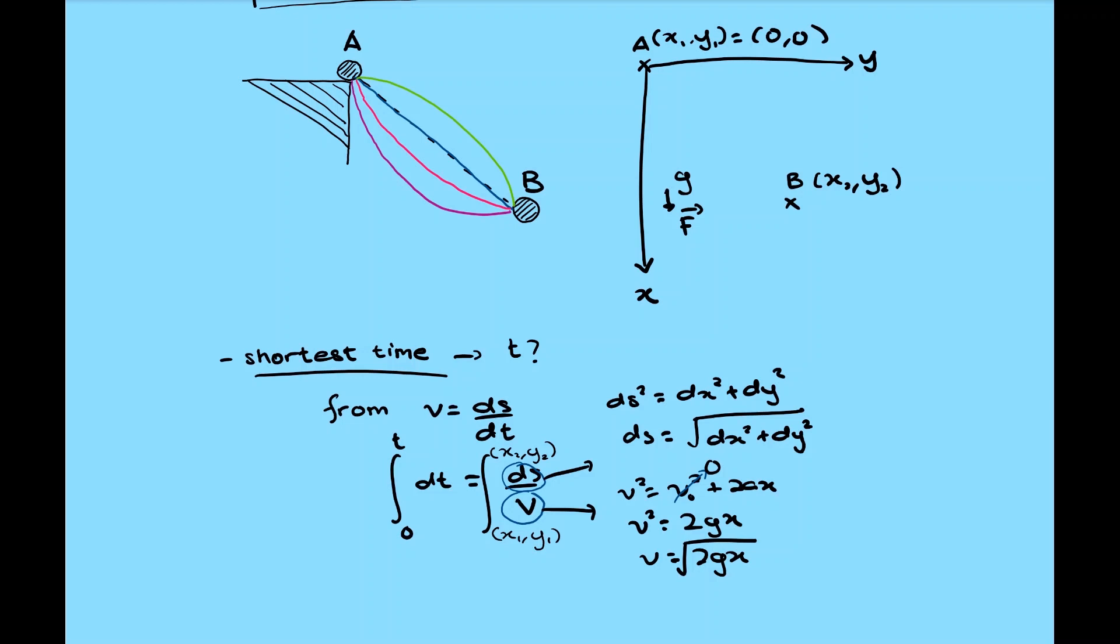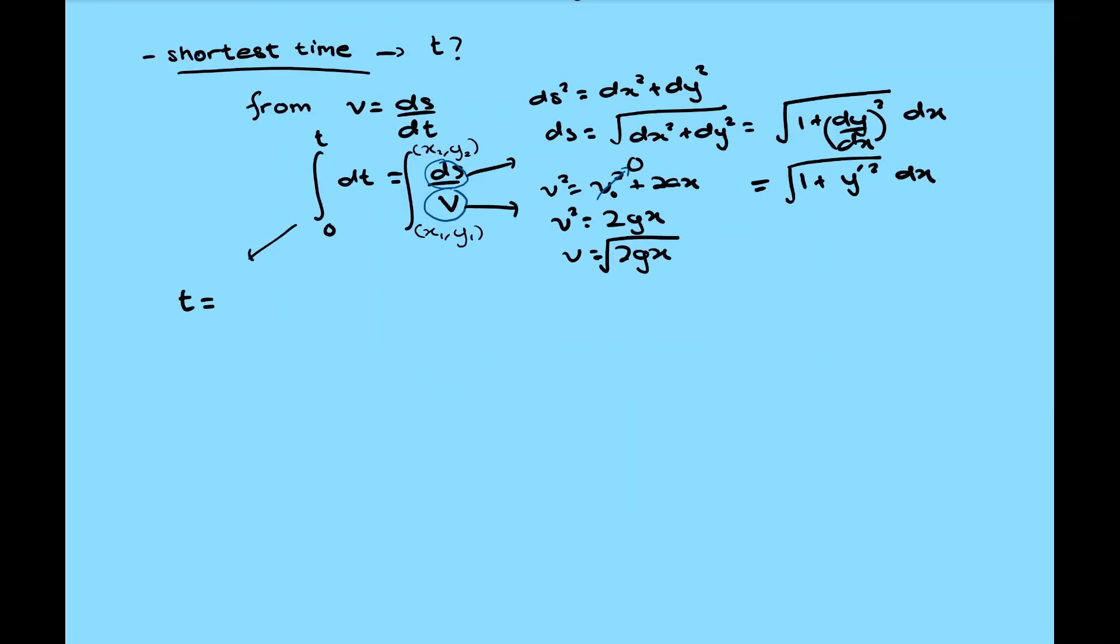For ds, we're going to simplify further. We're going to take out dx out of the square root. And we can have ds in this form, where y prime is dy dx. Substitute all together. Now we have t in this form. Observe that we eliminate the term for dy, so we can just focus in solving the integral for dx. Since 1 over square root 2g are just constant, we can simply take them out of the integral. And with this form, we can proceed to the next step.